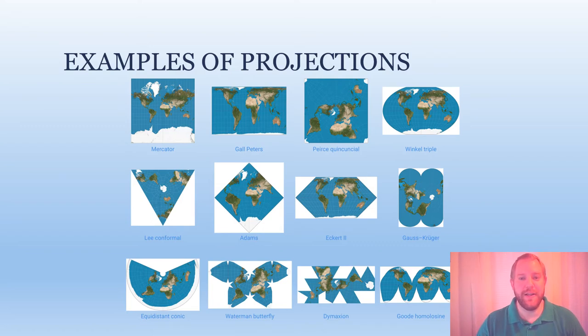And then further down are some that are probably a little bit less familiar, such as the Lee conformal, which is a triangle shape, and the Waterman Butterfly, and the Dymaxion, which are a little bit more out there.